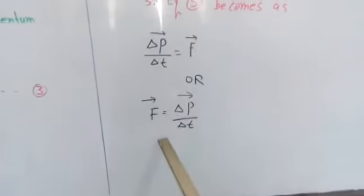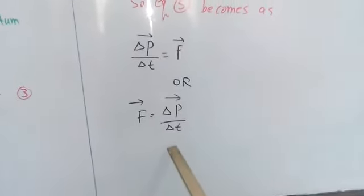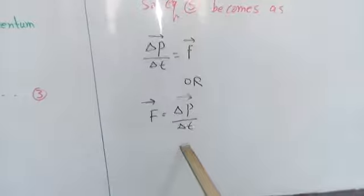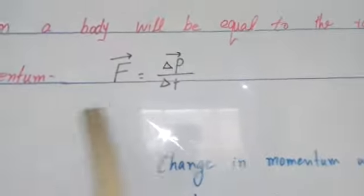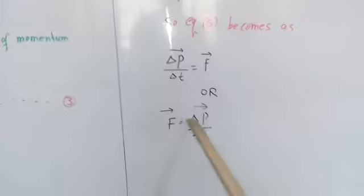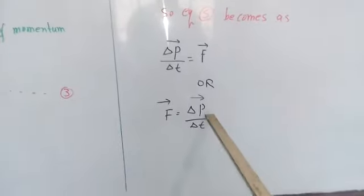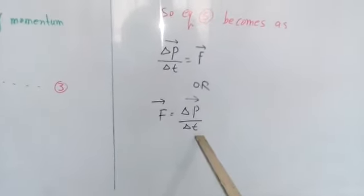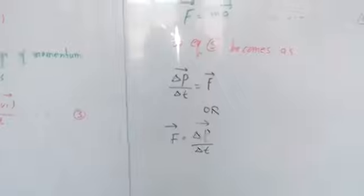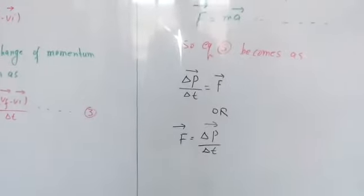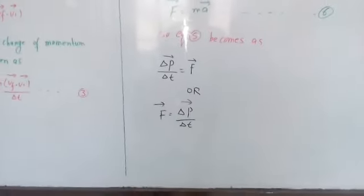اور ہم F کو لکھ سکتے ہیں: F = delta P over delta T۔ یہ relationship ہم نے یہاں start میں لکھی تھی، اور اب یہ prove ہو گئی کہ force جو ہوتی ہے وہ change in momentum with respect to time ہوتی ہے — یہ force کی نئی definition ہے۔